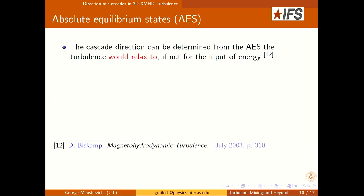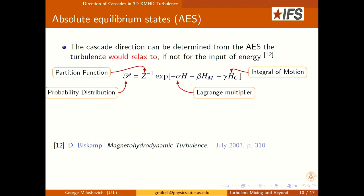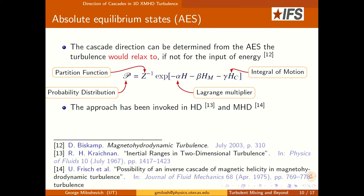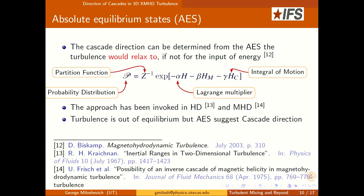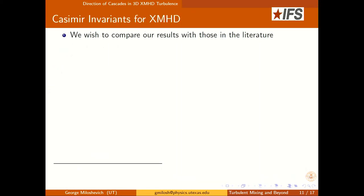To answer this, we decided to calculate the absolute equilibrium states that would predict the direction of the cascades. This method has been used earlier and can be found in turbulence textbooks on MHD. Basically, you find the equilibrium state given by a Gibbs distribution and argue that the various spectral quantities would like to relax into that state — however, we are not letting them relax; we are constantly pumping the energy. The Lagrange multipliers in the integrals of motion are basically energy and the helicities. This approach was successfully invoked in hydrodynamics and MHD by Kraichnan and Frisch.